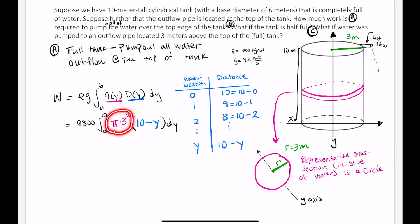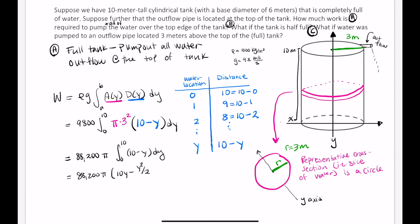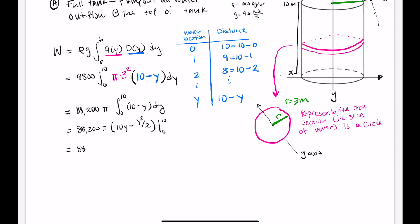Let's bring all the constants out to the front. We have 9800 times 3 squared, which is 9, so 9800 times 9 equals 88,200. Pi is just a constant, so we have 88,200π times the integral from 0 to 10 of (10 minus y) dy. Integrating gives 88,200π times [10y minus y squared over 2] evaluated from 0 to 10. Substituting y equals 10: 10 times 10 minus 100 over 2, which gives 100 minus 50, so 50. That means 88,200π times 50.